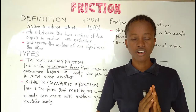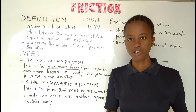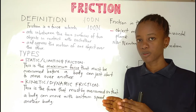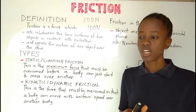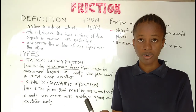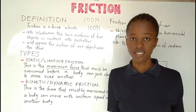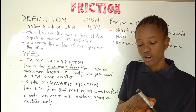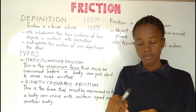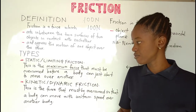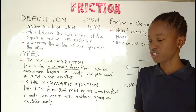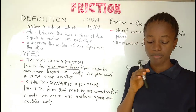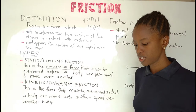The second type of friction is called dynamic or kinetic friction. That's the force that must be overcome for a body to keep moving in uniform speed over another body. Even as a body is in motion over the other body, there is still friction present. You need to apply some force that will overcome this kinetic or dynamic friction to keep the body moving at uniform speed.